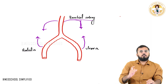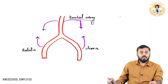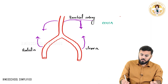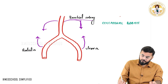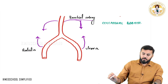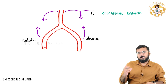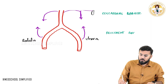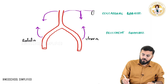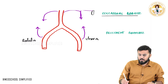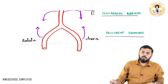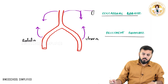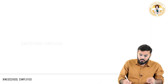The branches coming directly from the brachial artery are called collateral branches. The branches coming from the radial as well as the ulnar artery are called recurrent branches. So we have two different types of branches: collateral branches and recurrent branches.